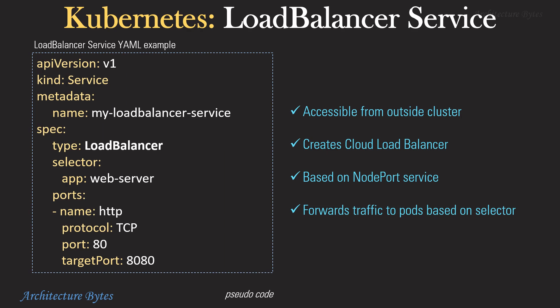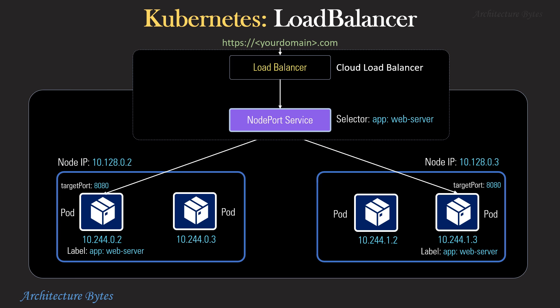Here is an example of a LoadBalancer service. It is accessible from outside the cluster. It creates a cloud load balancer and is based on the NodePort service — it forwards traffic to pods based on the selector. When you create a LoadBalancer service in Kubernetes, it results in the creation of a cloud load balancer, which points to a NodePort service, and pods that match the service selector criteria receive traffic. Since the cloud load balancer IP address is fixed, you do not have to worry about node IP addresses within the cluster changing.